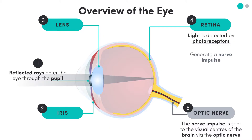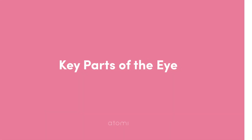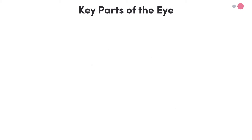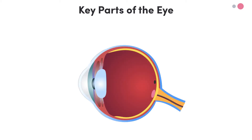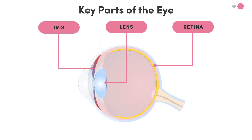In the bigger picture, there are a lot of structures all working together to make things happen. But you don't need to worry about learning everything — instead, we'll focus on the key structures of the eye.